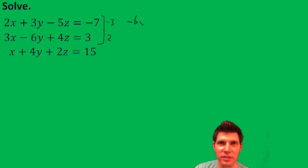So I end up with negative 6x minus 9y plus 15z equals 21. And this becomes positive 6x minus 12y plus 8z equals 6.